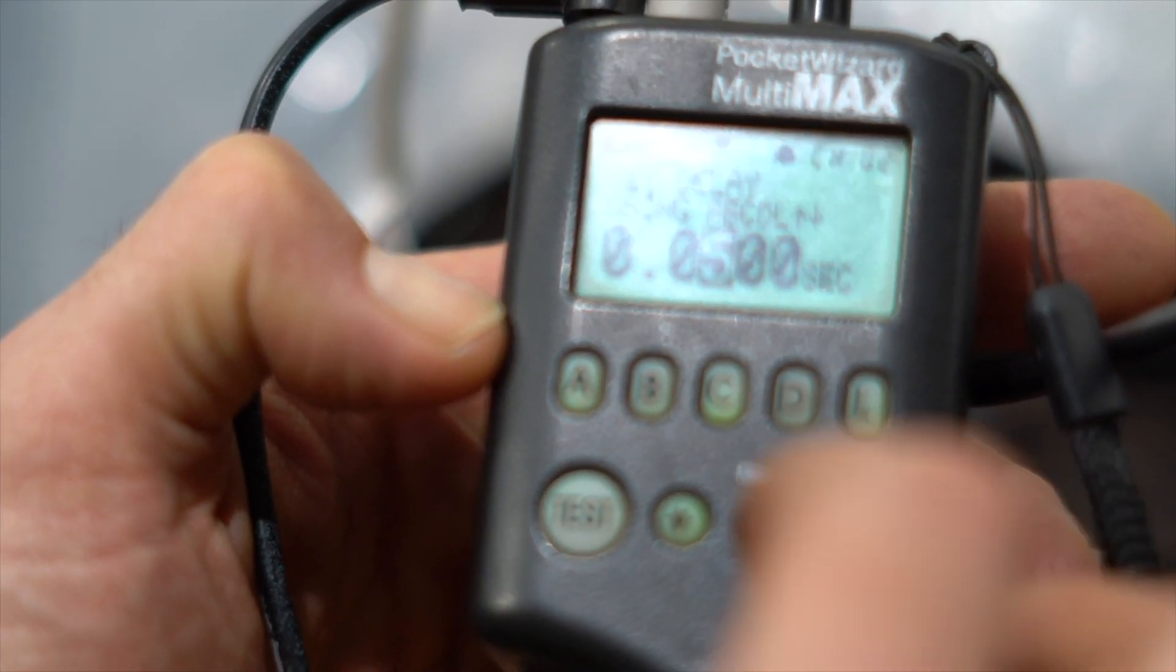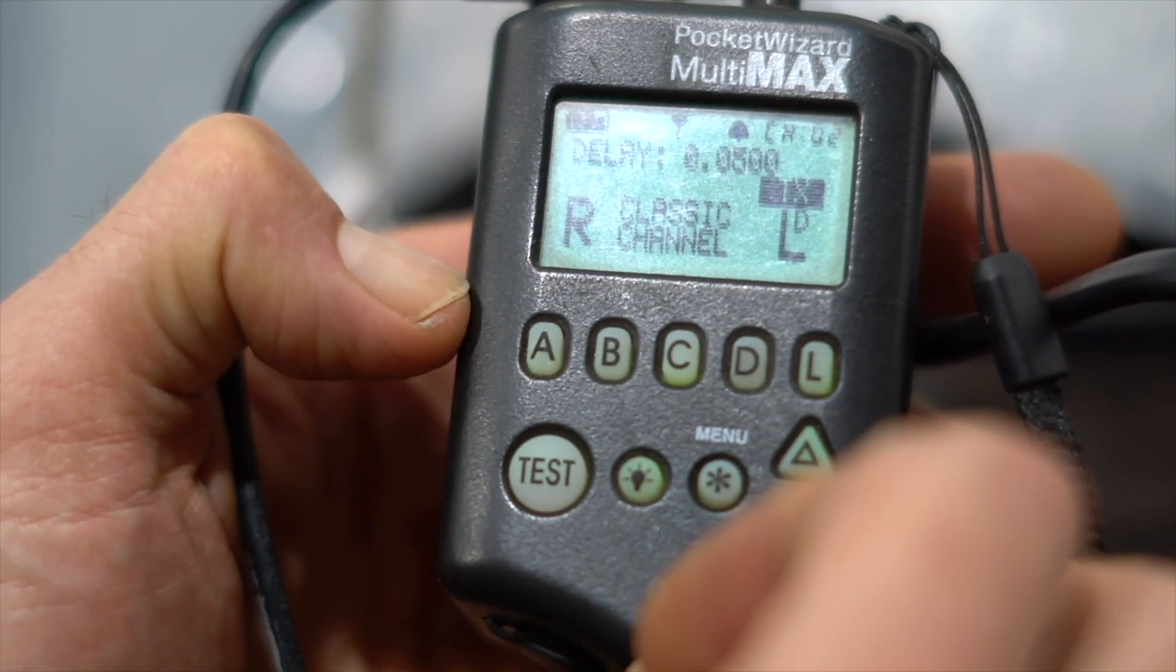It's normally used to synchronize the flash to a camera. The pocket wizard also has features that allow for timing control. The Multimax has microsecond delay features so you can incrementally adjust the timing between when it receives the input and when it triggers the camera.